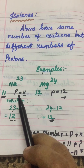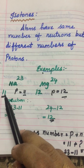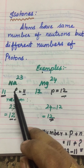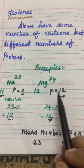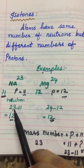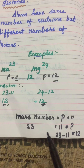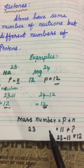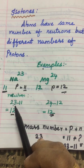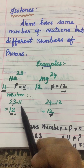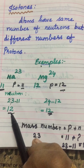First let's find out the proton value. Atomic number means proton or electron value, so the proton value for sodium is 11 and for magnesium it is 12. Now we have to find out the neutron value. To find the neutron value, subtract the proton value from the mass number. So 23 minus 11 equals 12. The neutron value for sodium is 12.